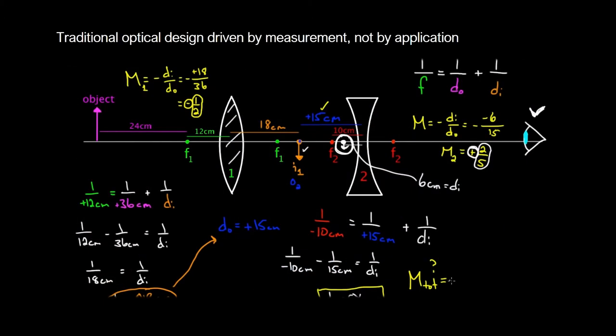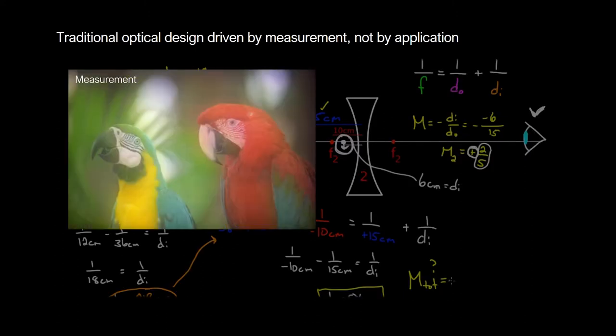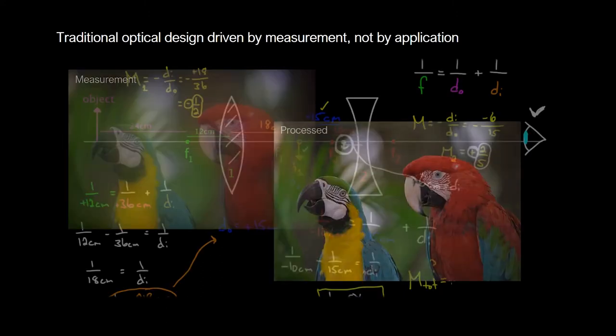Conventional optical design is complicated, involving compound systems to focus light and minimize aberrations. But for digital imaging systems, what matters is not the measured image, but rather the post-processed image.